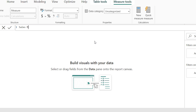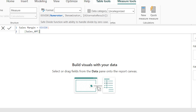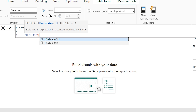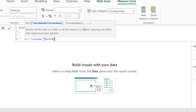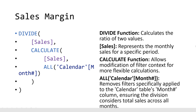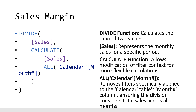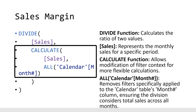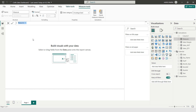Here I'll calculate Sales Margin = DIVIDE([Sales Amount], CALCULATE([Sales Amount], ALL(Calendar[MonthNumber]))). The DIVIDE function calculates the ratio. The first argument gives month-by-month sales, and the CALCULATE with ALL removes the month filter to give grand total sales. Dividing monthly sales by grand total sales gives the percentage contribution of each month. I'm adding another New Measure for Daily Average Sales.